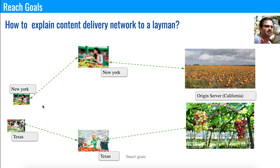Another interesting interview question is how to explain CDN to a layman. On screen I have pictures: there is a farm in California — I call it the origin server — producing fruits and vegetables. On the left side are customers shopping from Newark and Texas. If a buyer wants to purchase fruits or vegetables, they don't want to travel all the way to California. Instead, they go to the nearest local store, which is how CDN works.